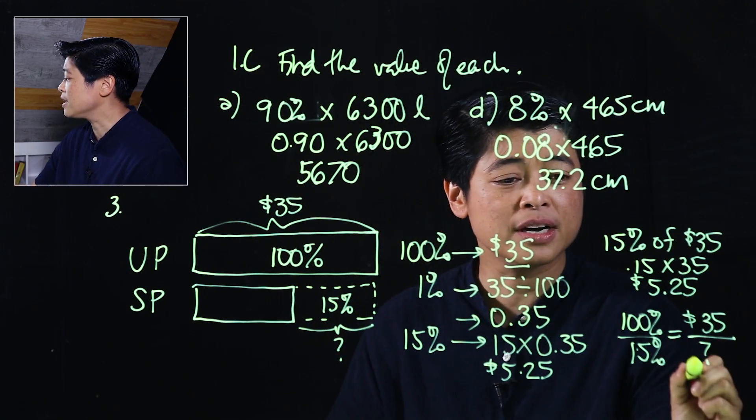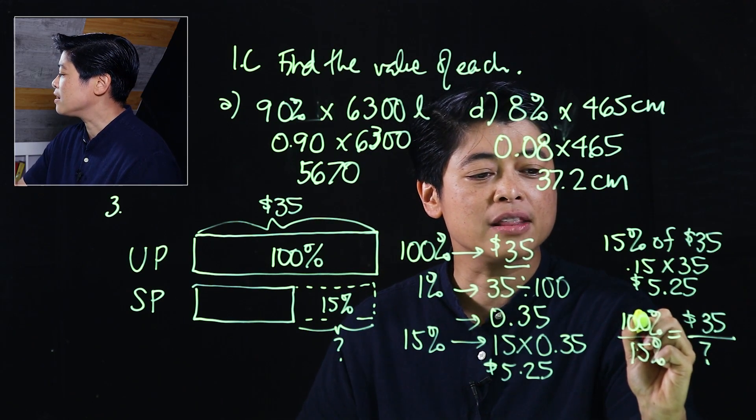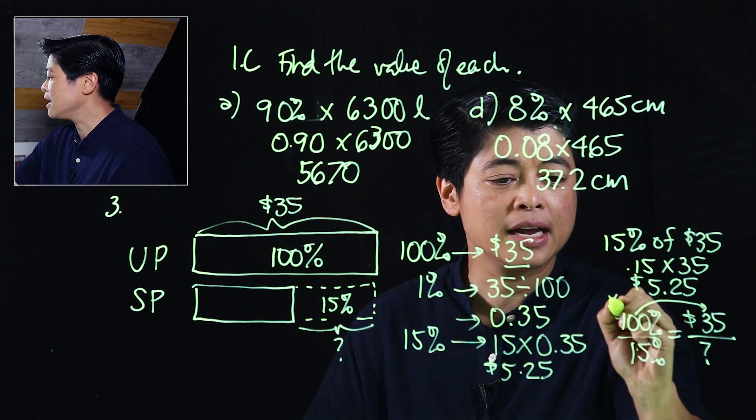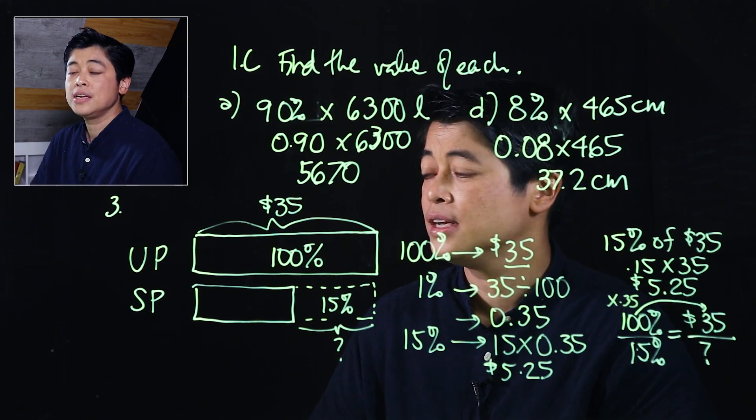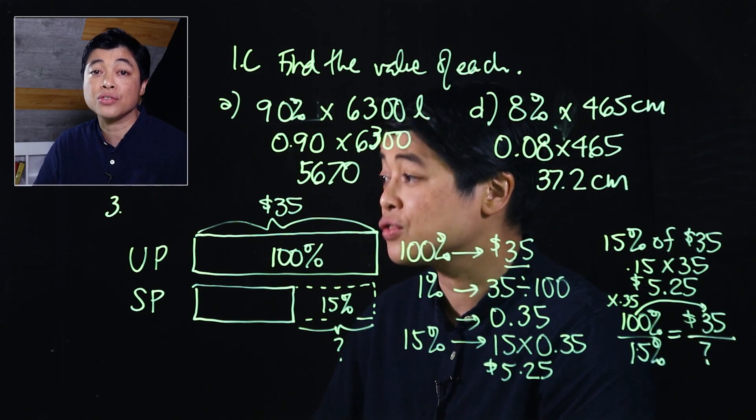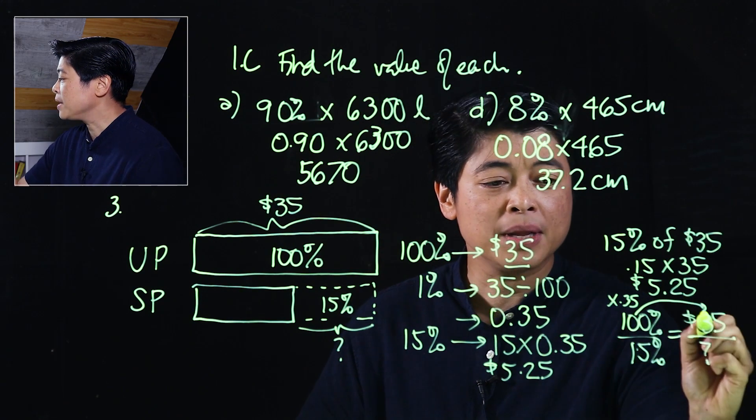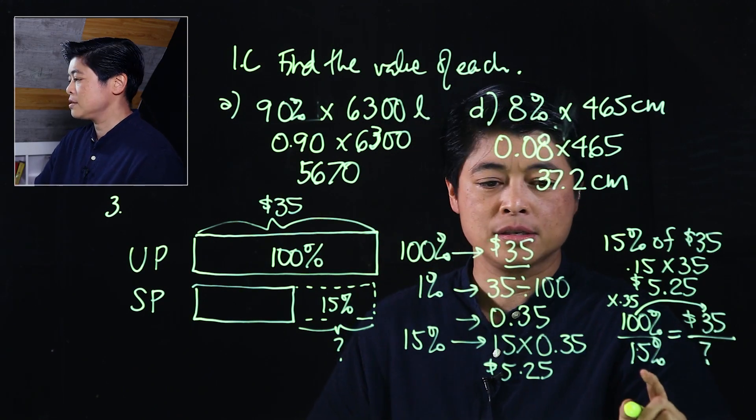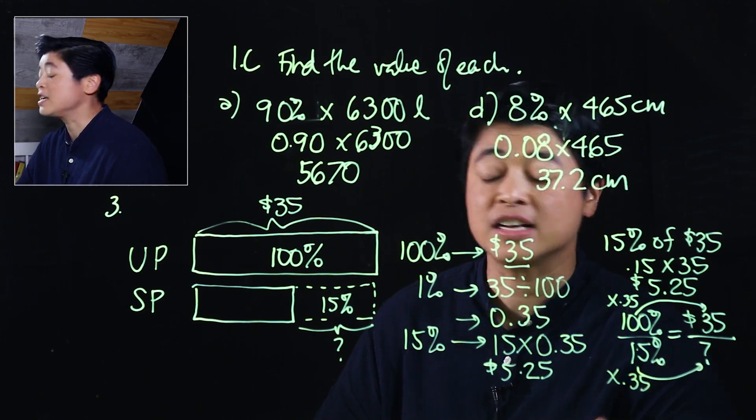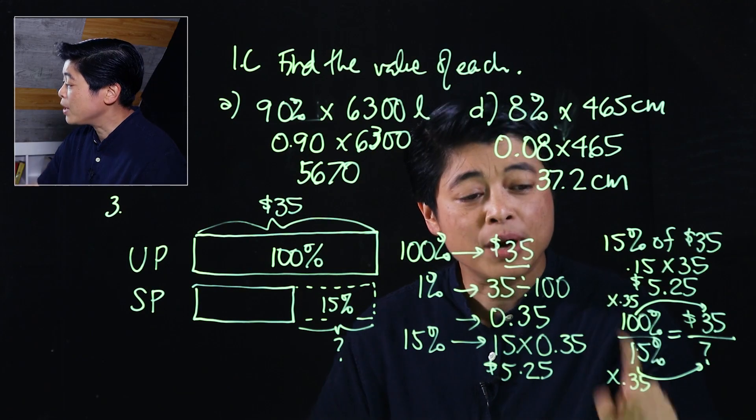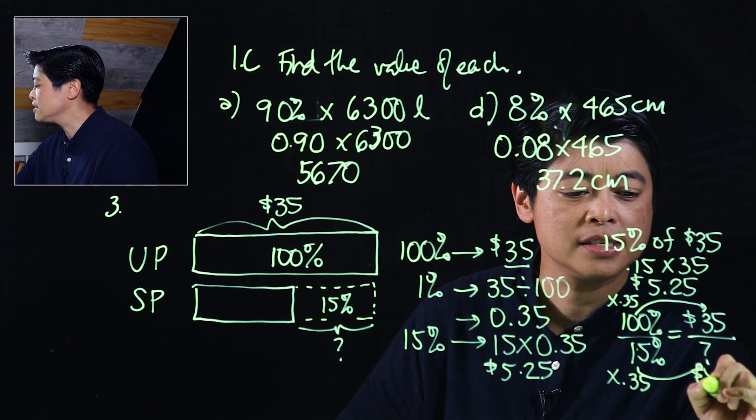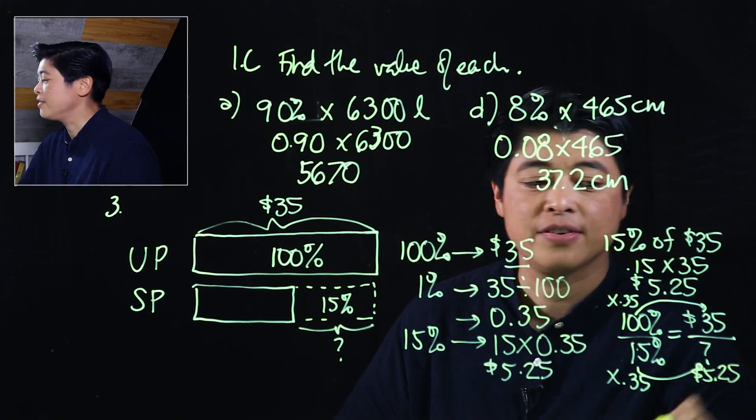So which means since we're looking for that, what we have to do is we have to either figure to go from here to here. That's technically times 0.35. So if here we multiply by 0.35, we're looking for equivalent fractions. So if we multiply by 0.35, then that means this needs to be multiplied by 0.35 as well. So when you take 0.35 and you multiply it by 15, you will get $5.25 as well.